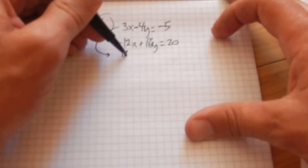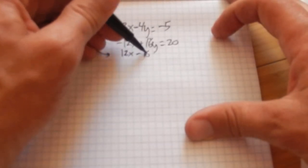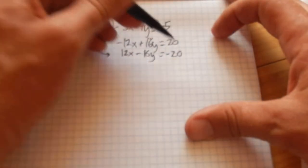So 3x times 4, 12x. Negative 4y times 4, negative 16y. Oh, it looks like trouble. Negative 5 times 4, negative 20.